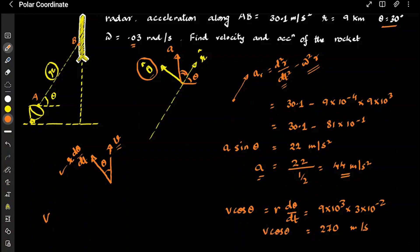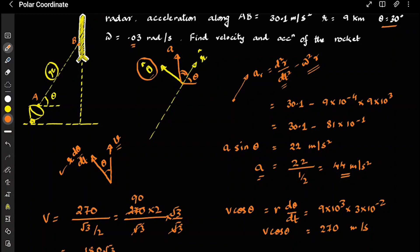From v·cos(θ) = 270, and θ is given so cos(θ) = √3/2, we get v = 270 × 2/√3. Multiplying numerator and denominator by √3 gives v = 540√3/3 = 180√3 m/s. So the velocity of the rocket is 180√3 meters per second.